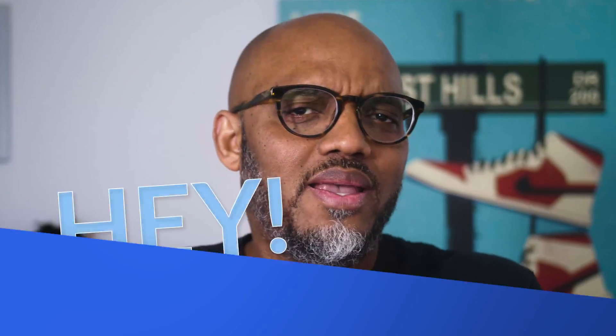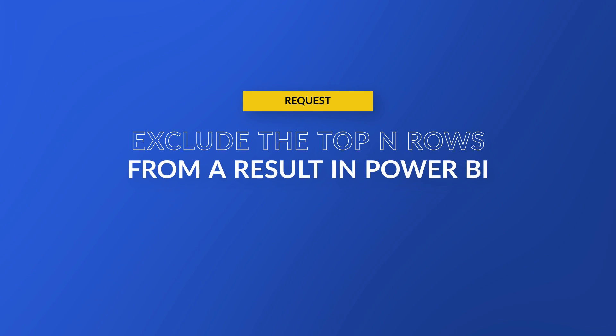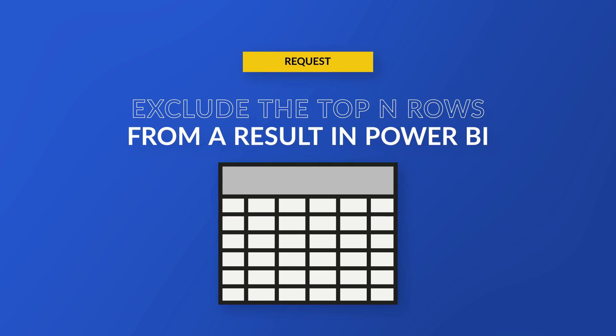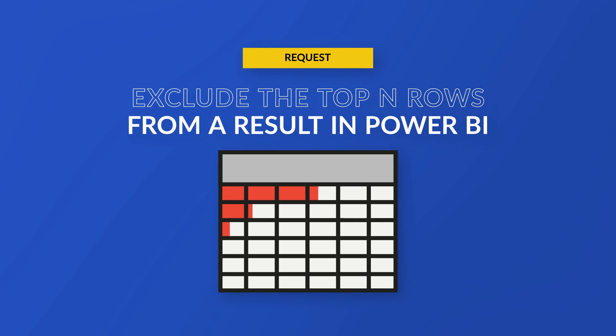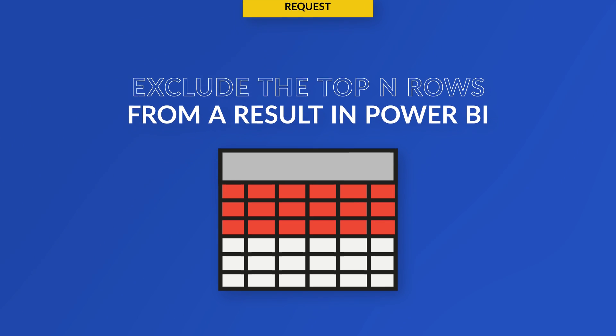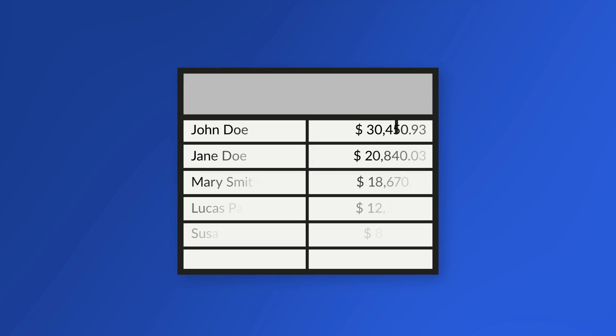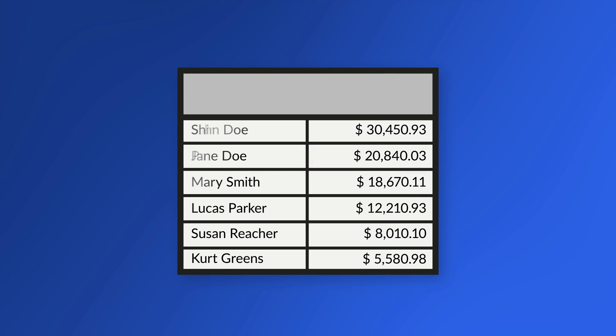It's Patrick from Guy in a Cube. And during a live stream, someone asked: how do you exclude the top end rows from a table?